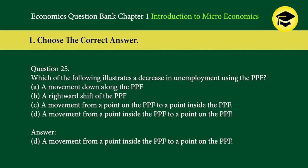Question 25: Which of the following illustrates a decrease in unemployment using the PPF? A. A movement down along the PPF, B. A rightward shift of the PPF, C. A movement from a point on the PPF, D. A movement from a point inside the PPF to a point on the PPF. Answer: D. A movement from a point inside the PPF to a point on the PPF.